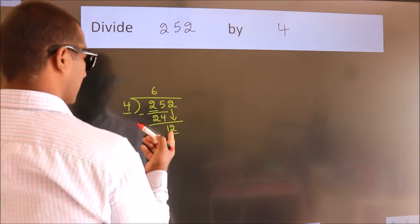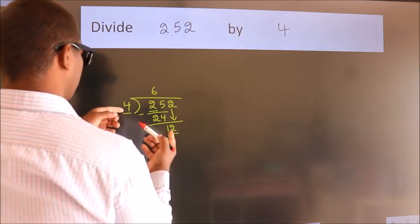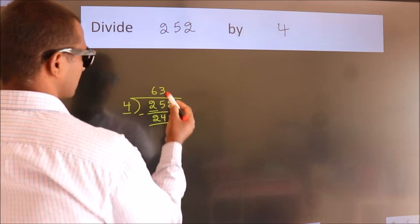When do we get 12? In the 4 table. 4×3 is 12.